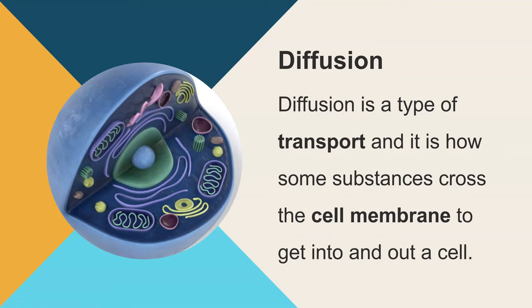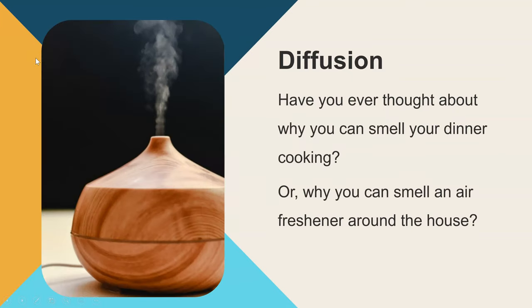Diffusion is a type of transport and it's how some substances cross the cell membrane into a cell or move out of a cell. Have you ever thought about why, if you're in your bedroom, you can smell dinner cooking? Or why the smell of an air freshener is all around the house?